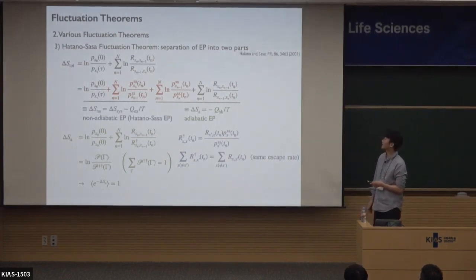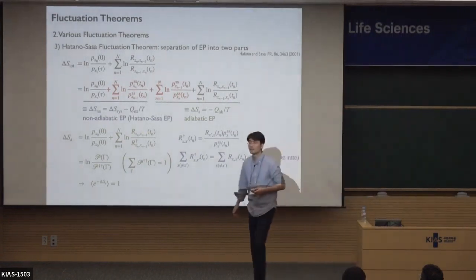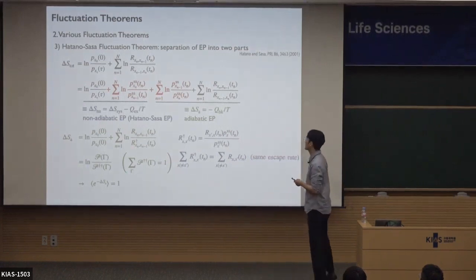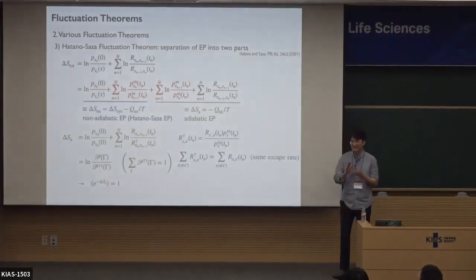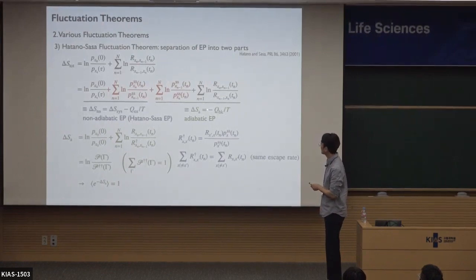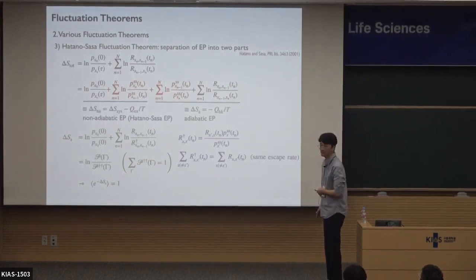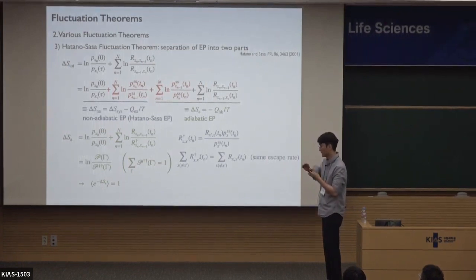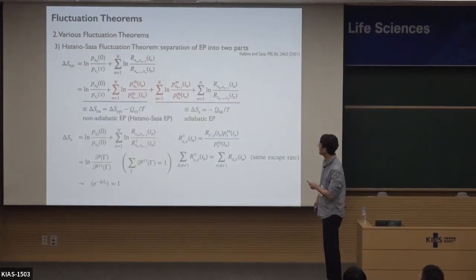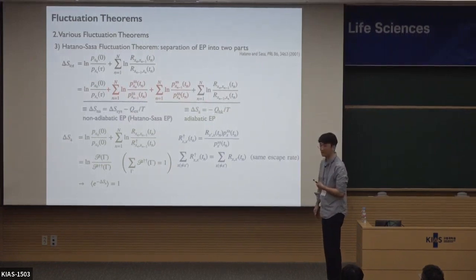This is the Hatano-Sasa fluctuation theorem. Any questions? How would one measure this experimentally? It is not easy to measure this quantity experimentally. The housekeeping entropy production corresponds to the steady state — in the steady state, the adiabatic entropy production equals the total entropy production, because the excess entropy is the entropy necessary for driving system transitions. So in steady state, this term vanishes and only the adiabatic entropy production remains. In steady state we can measure the housekeeping heat, but in a general case it is not easy to measure experimentally.